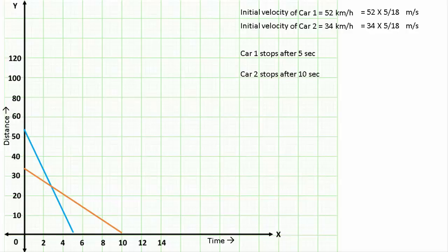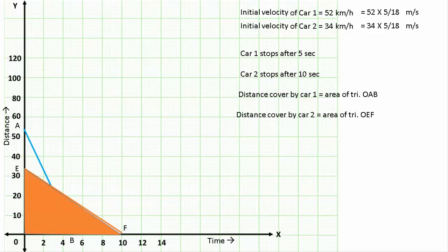Now if we give a name to the intersections of x and y-axis, then it will be O, A, B, E, and F. So you know very well the distance covered by car 1 is equal to area of triangle OAB, and distance covered by car 2 is equal to area of triangle OEF.